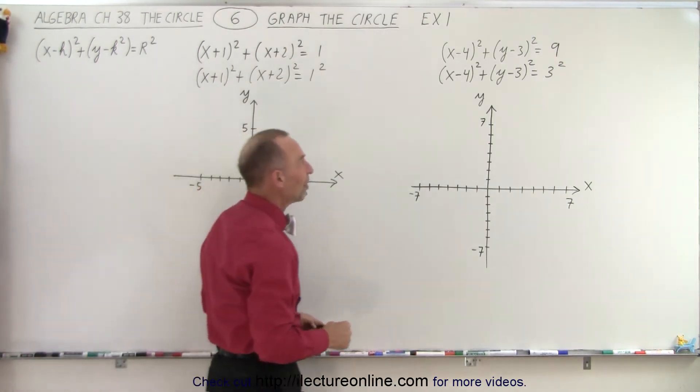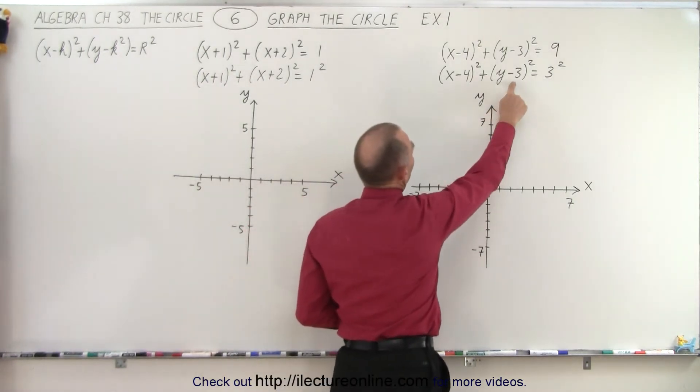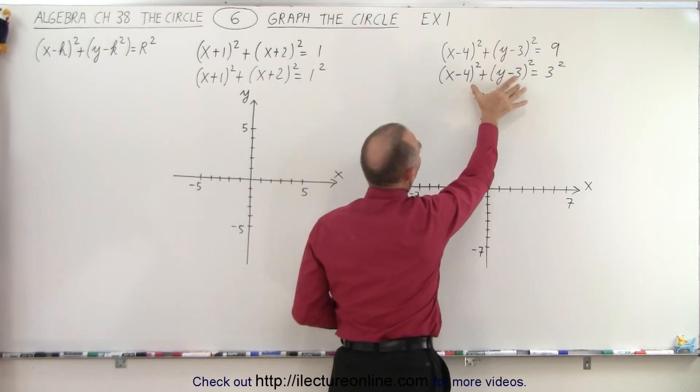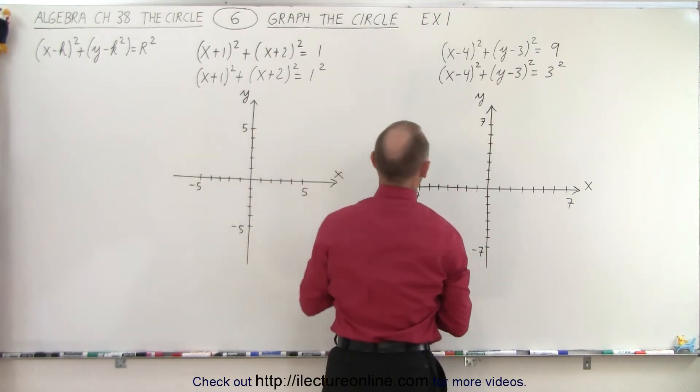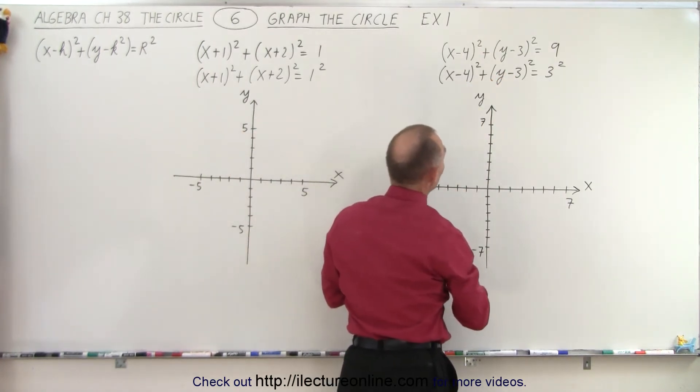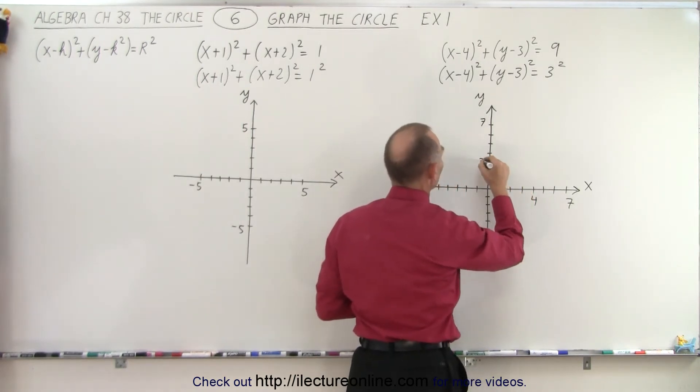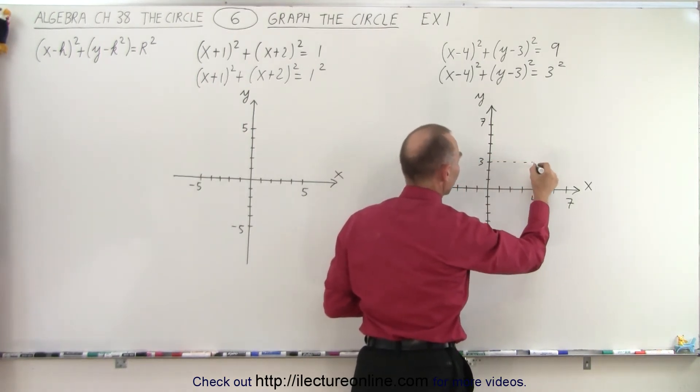So the next thing we want to do is find the center of the circle. And notice that if these are minus signs, then h and k are positive. You can see that from the general equation. So in this case, h is equal to 4 and k is equal to 3. So where those two meet, that would be the center of the circle.